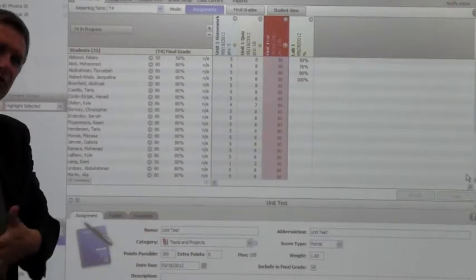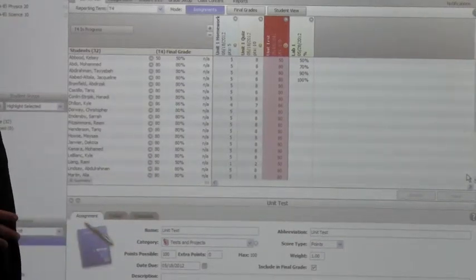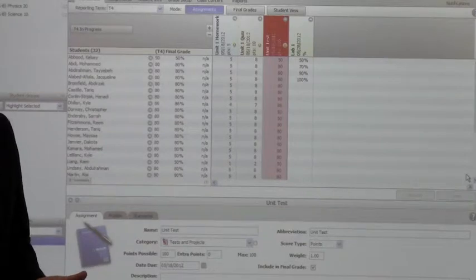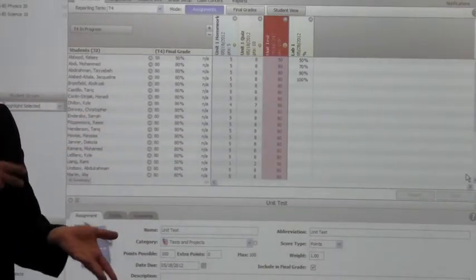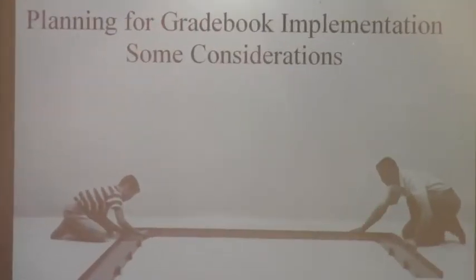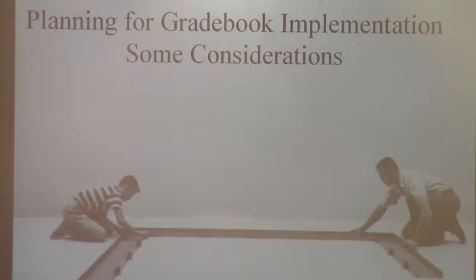After a brief break, Anthony Walsh introduced himself. He works in Research, Data, and Knowledge, and is not a trainer or affiliated with Pearson or digital technology. He explained the three handout sheets: one summarizing key points for the end, one for writing down things the school may want to happen next year, and one simply for notes as you go along.